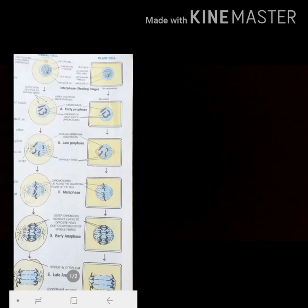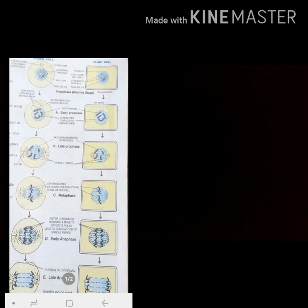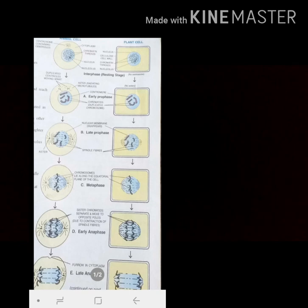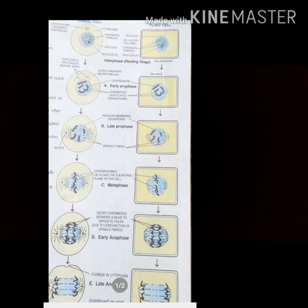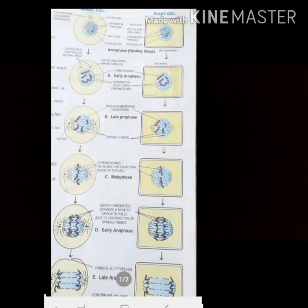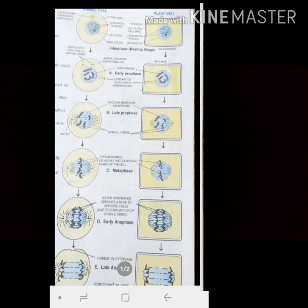After karyokinesis comes cytokinesis, where the division of the cytoplasm takes place. In animal cells, the cleavage furrow deepens completely, separating the two daughter cells. This is how the formation of daughter cells takes place, completing the whole phase of mitosis.